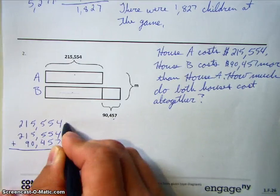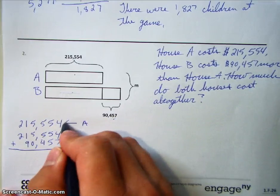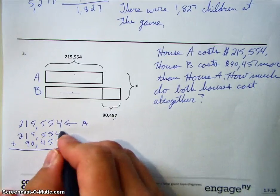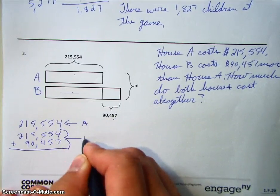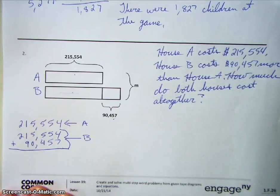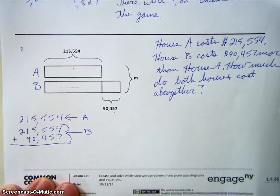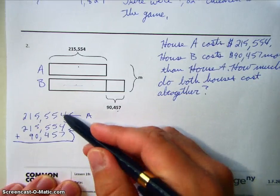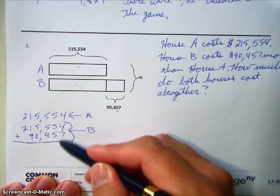This right here is house A, and then house B is that amount. So we've combined our two steps into one bigger step, and now we can go through and add these all up.